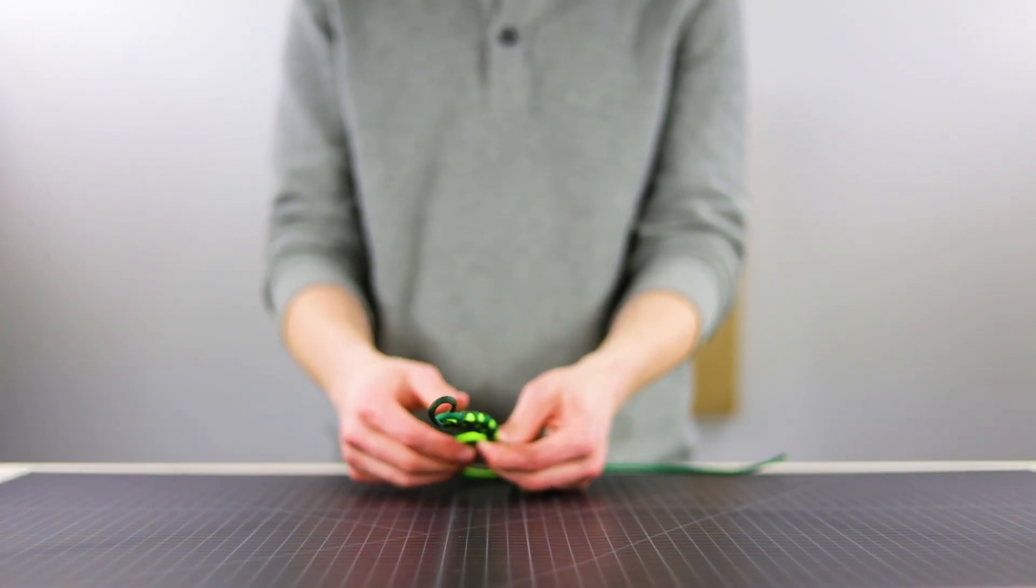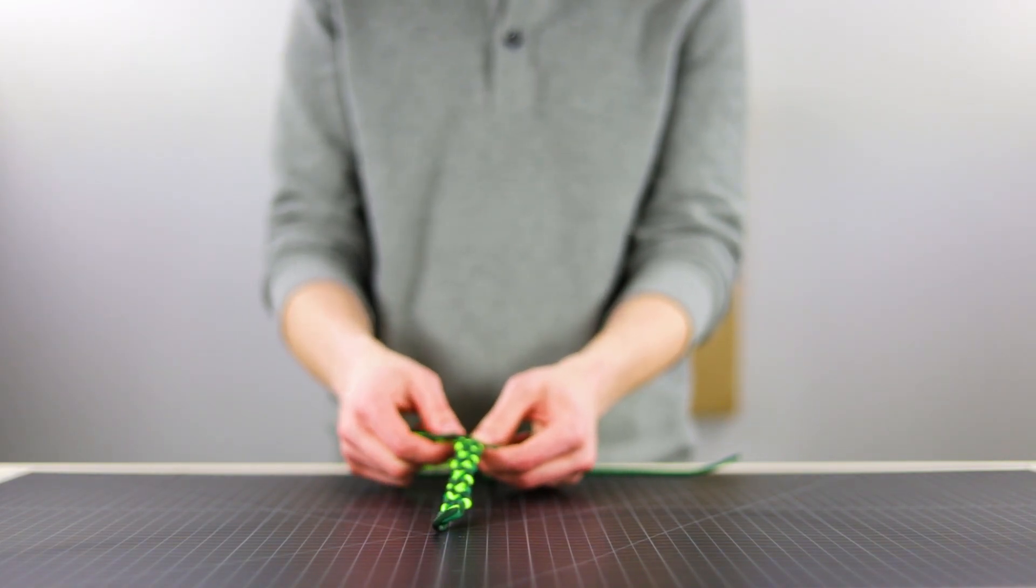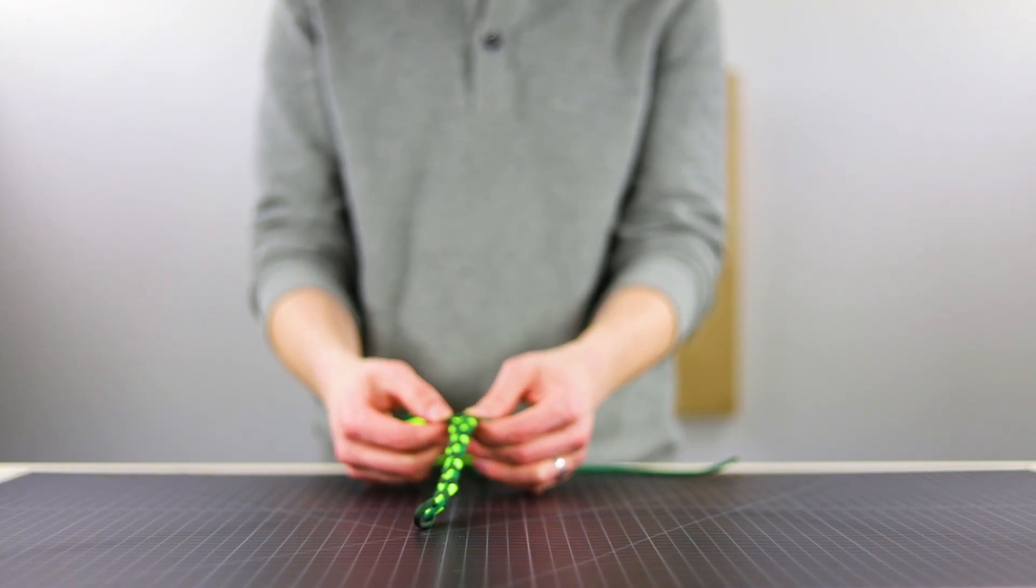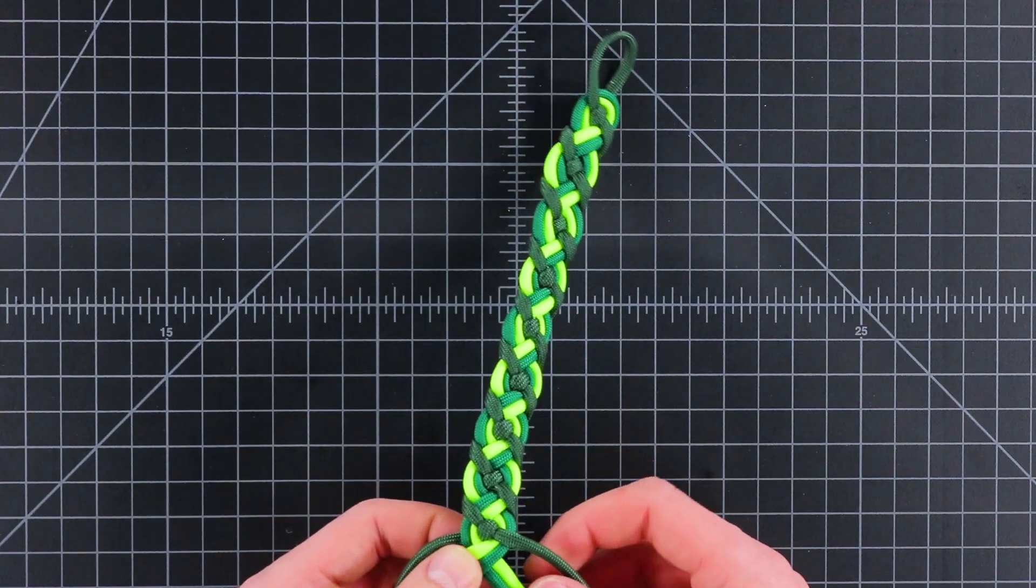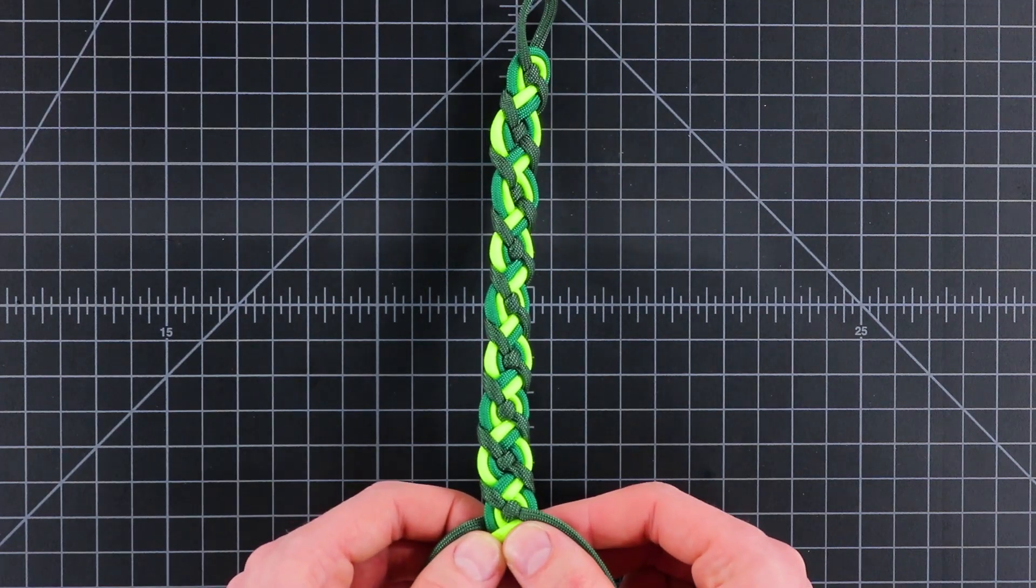All right so I've gotten the bracelet as long as I need it here to fit around my wrist. I think it's probably close to eight inches. And to finish it off we're just going to do one instance of the cobra weave or square knot to hold all of our cords together.